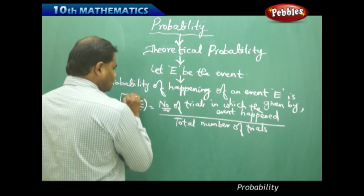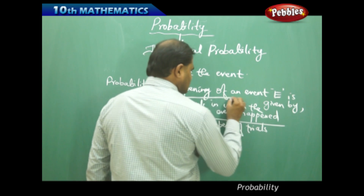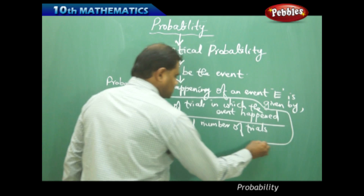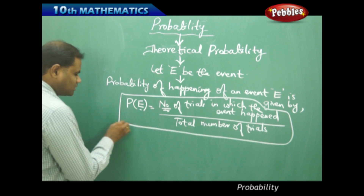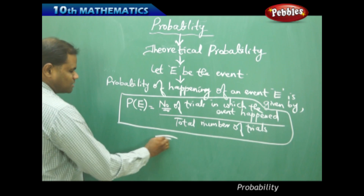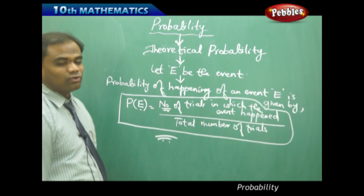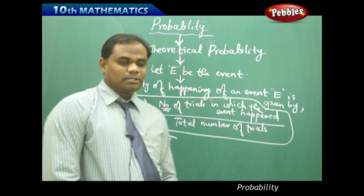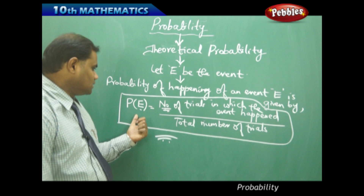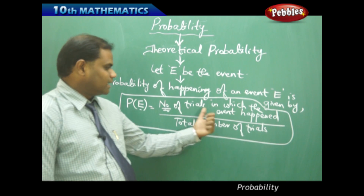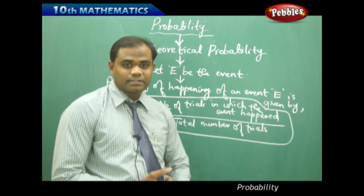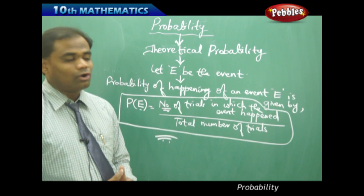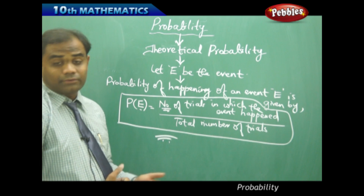So let's see how we can use this formula for an example problem. Probability of event e equals number of trials in which the event happened divided by total number of trials.